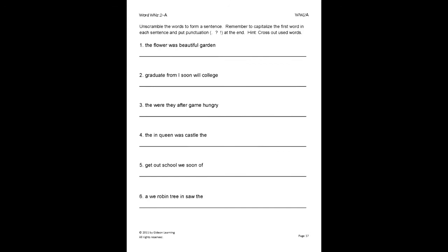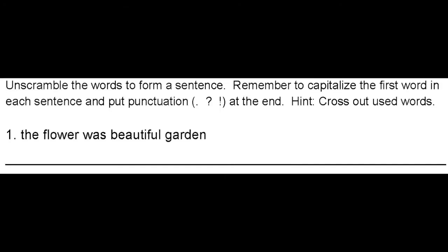Here, unscramble the words to form a sentence. Remember to capitalize the first word in each sentence and use punctuation at the end. It helps to also cross out used words. Let's look at number 1. We are given the words: the, flower, was, beautiful, and garden. So we must unscramble the words to form a complete sentence. The flower garden was beautiful.